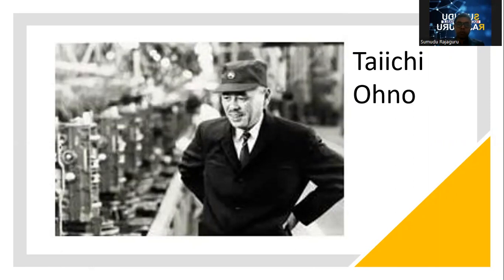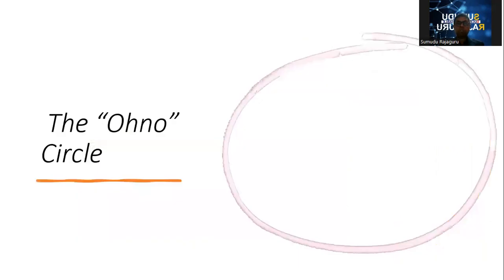According to Taiichi Ohno, if we want to go for a solution, first we have to gather the facts and collect observations. So Taiichi Ohno proposed that you have to go to the operation floor. Whatever area you want to observe, you have to select a suitable place, draw a circle on the floor, then stand inside the circle and continuously observe your surroundings.